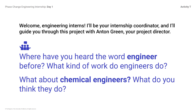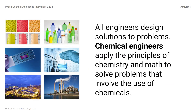What about chemical engineers — what do you think they do? Chemical engineers apply the concepts of chemistry and math to solve problems that involve the use of chemicals such as fuels, medical products, food, and other products. It is not necessary to correct or filter responses, as the point is to share prior knowledge. All engineers design solutions to problems, and chemical engineers apply the principles of chemistry and math to solve problems involving the use of chemicals.